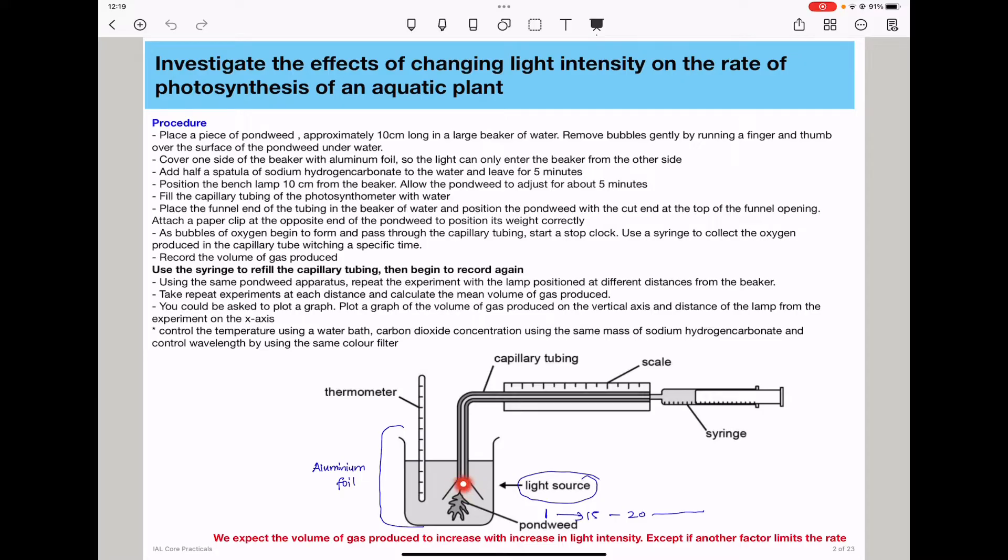This is what we're talking about here. The cut end has to face the funnel so that any bubbles of gas produced can go into the capillary tubing in order to be collected using the syringe. Attach a paper clip at the opposite end of the pondweed to position its weight correctly. As bubbles of oxygen begin to form and pass through the capillary tubing, you need to start a stopwatch and use a syringe to collect the oxygen produced in the capillary tubing within a specific time.